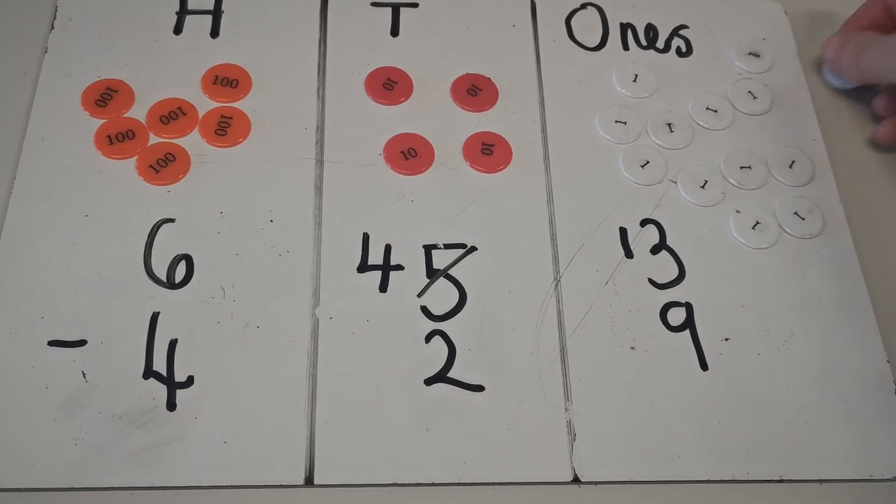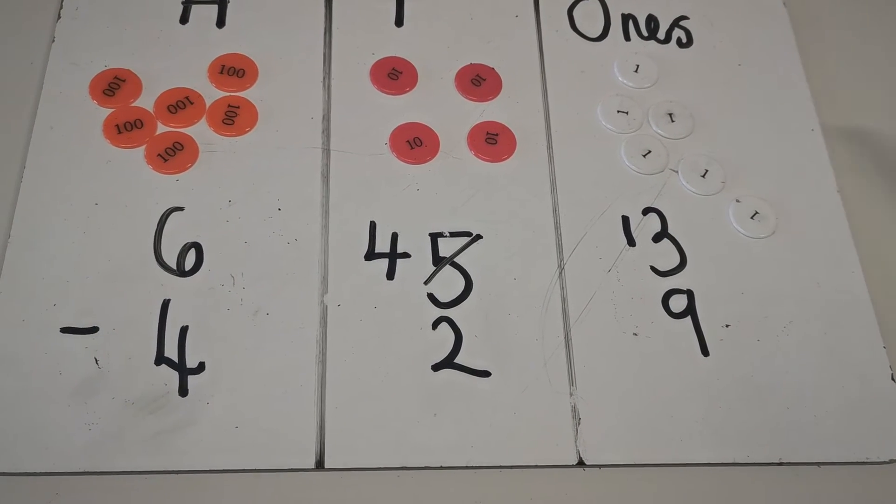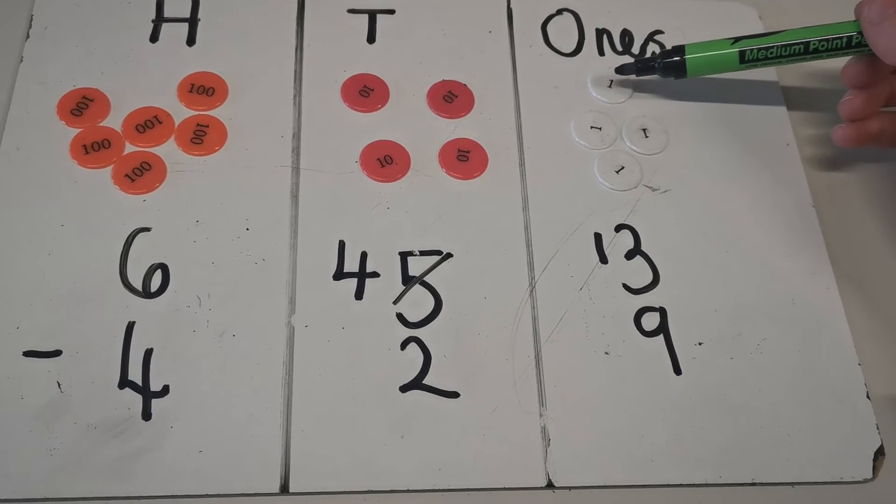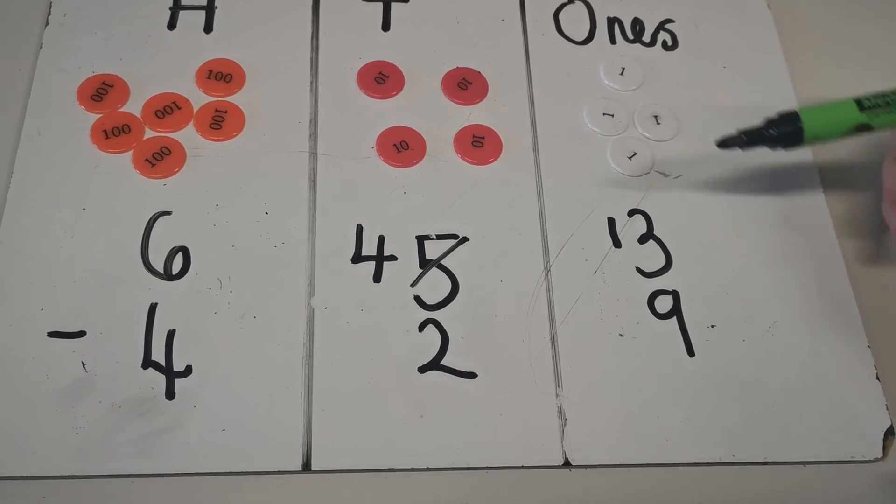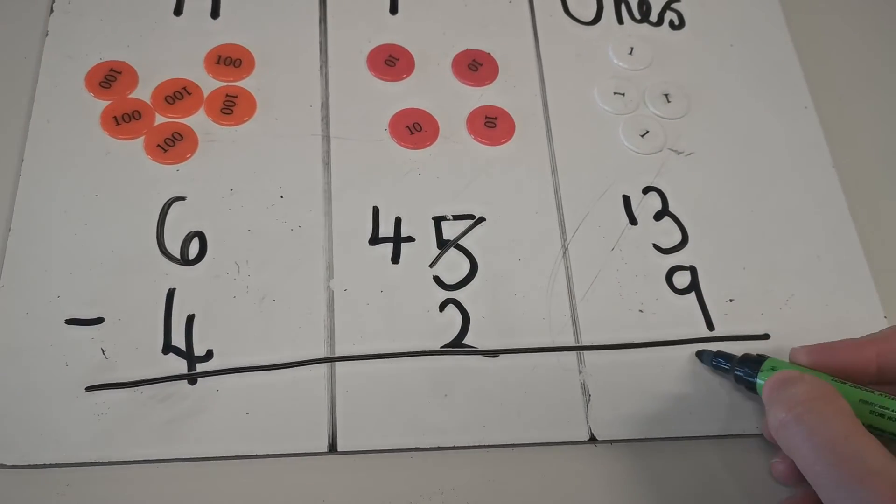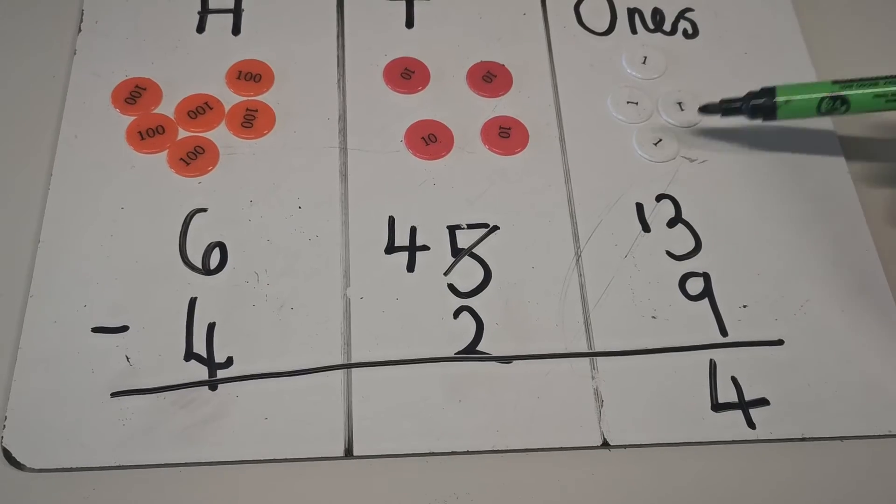I'm now going to subtract 9. 1, 2, 3, 4, 5, 6, 7, 8, 9. As you can see, I'm left with 1, 2, 3, 4. So I'm going to draw a line and place my 4 ones there. I've got 4 ones left.